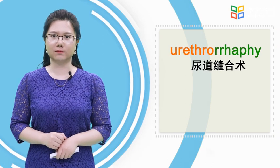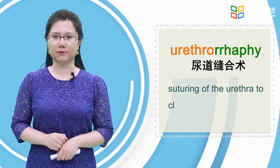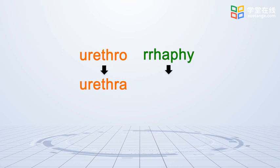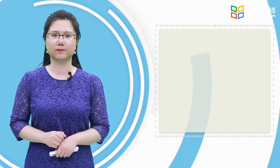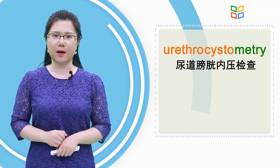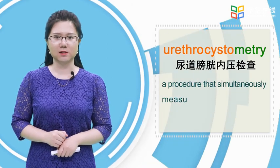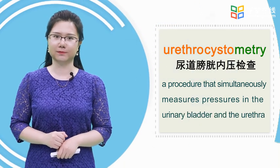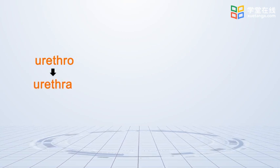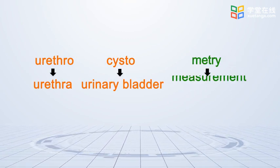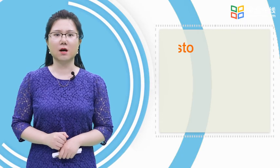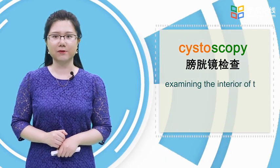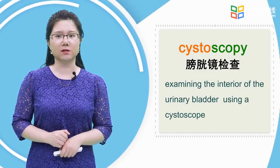Urethroraphy means suturing of the urethra to close a fistula. Urethrocystometry means a procedure that simultaneously measures pressures in the urinary bladder and the urethra. Cystoscopy is examining the interior of the urinary bladder using a cystoscope.